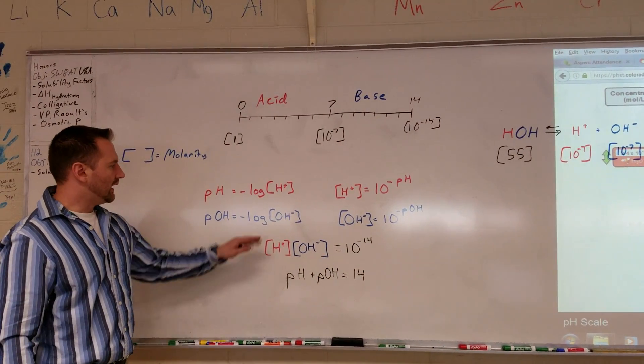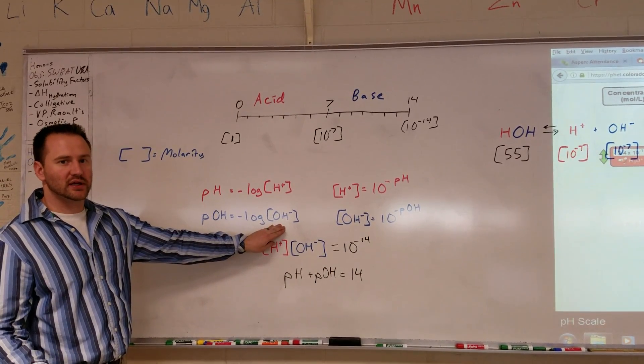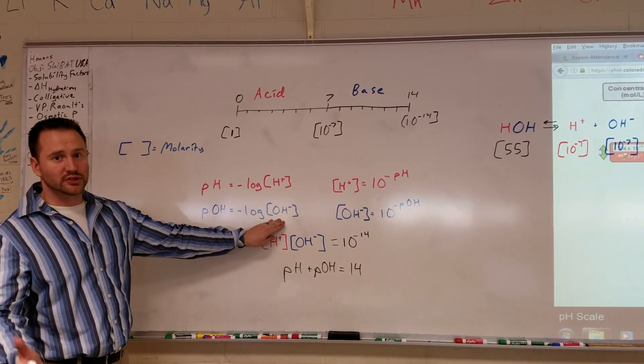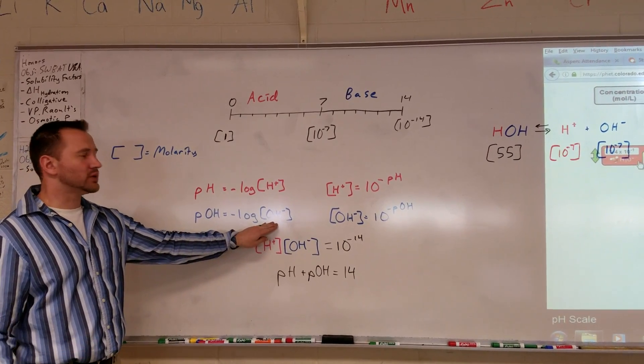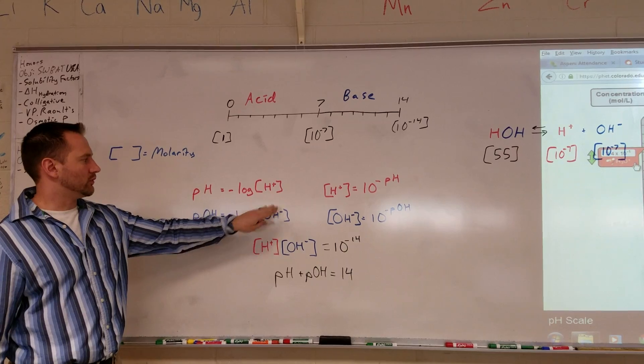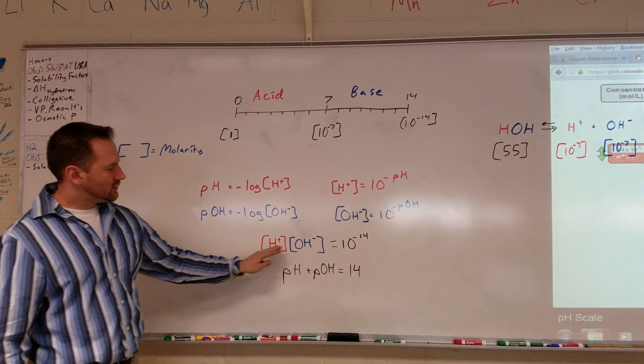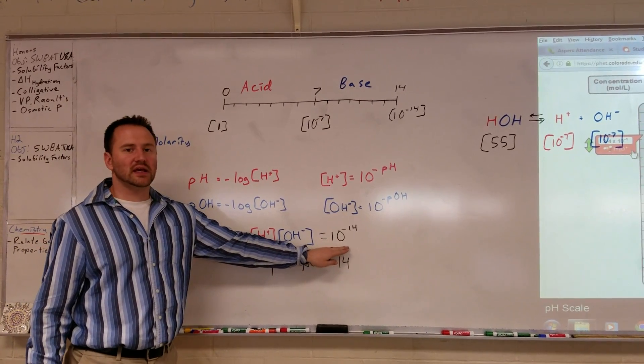The pH is the negative log of the hydrogen ion concentration. The pOH is the negative log of the hydroxide. Since the ion concentrations multiplied by each other equal 10 to the negative 14, the pH plus the pOH is always equal to 14. So if you have a high concentration of H+, you have a low concentration of hydroxide.